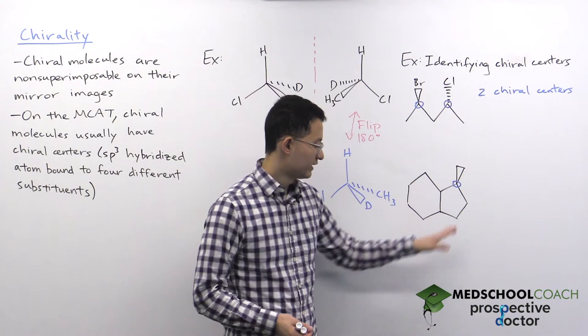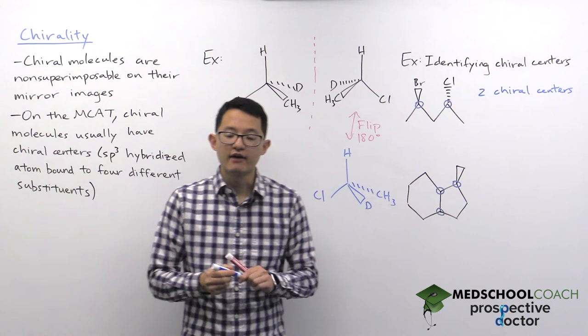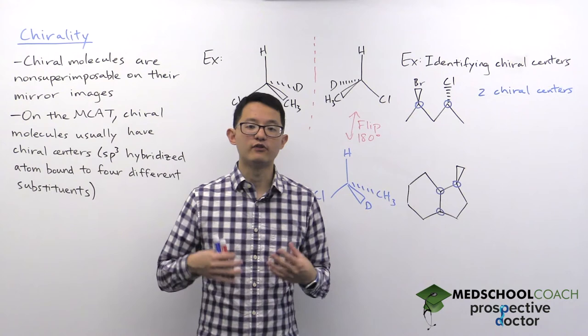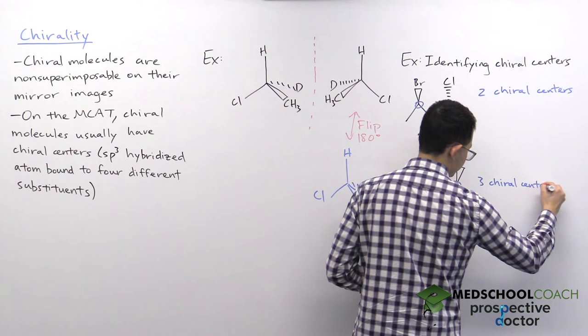Now this is not the only chiral center, though. There are actually additional chiral centers at this atom as well as this atom. So you have to watch out for these situations. Again, you're not just looking for wedges and dashes—you're looking for sp3 hybridized atoms bound to four different substituents. So in this case, we can see that this molecule has three chiral centers.